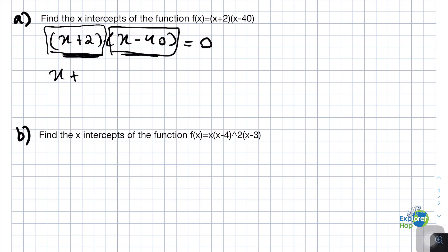So we can take this and this separately and solve them for 0. For example, x+2 equals 0, which would give us x equals -2. Then we can solve x-40 equals 0, therefore x equals 40.